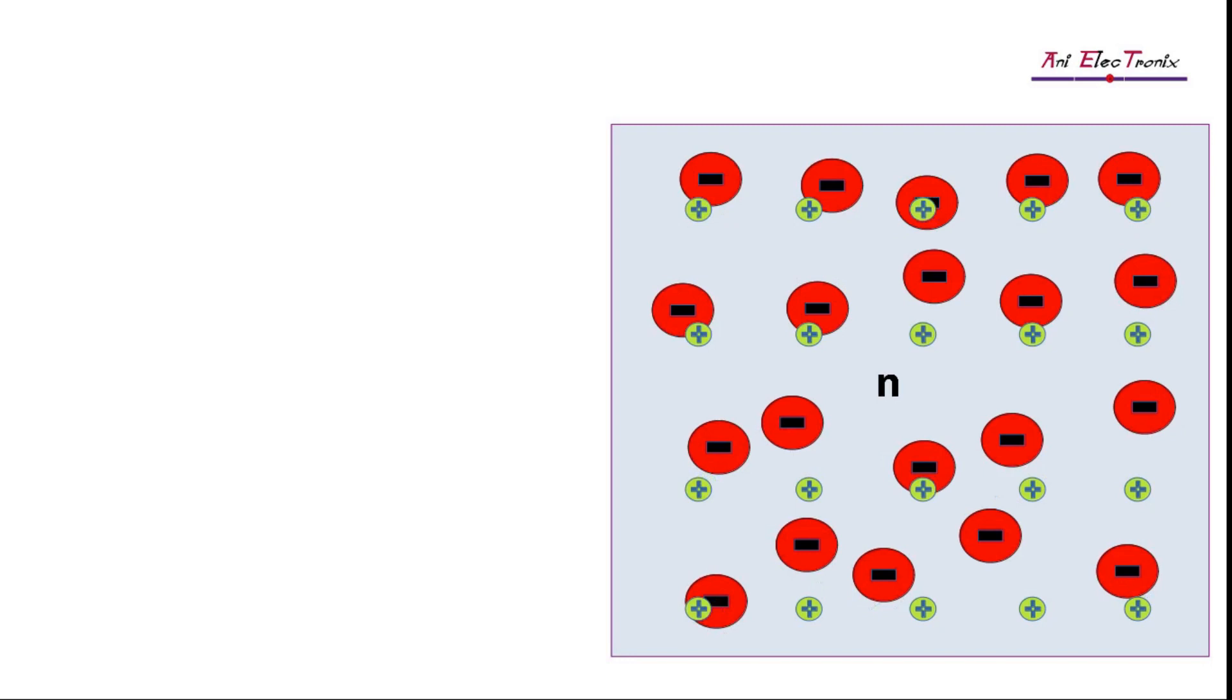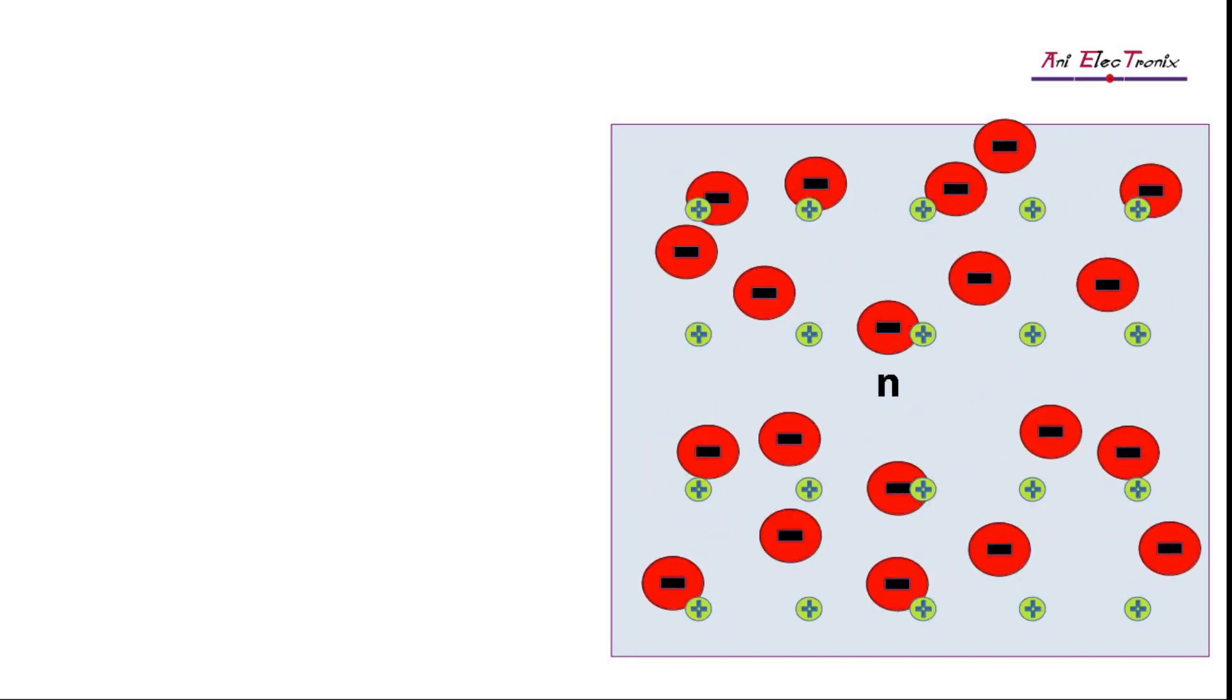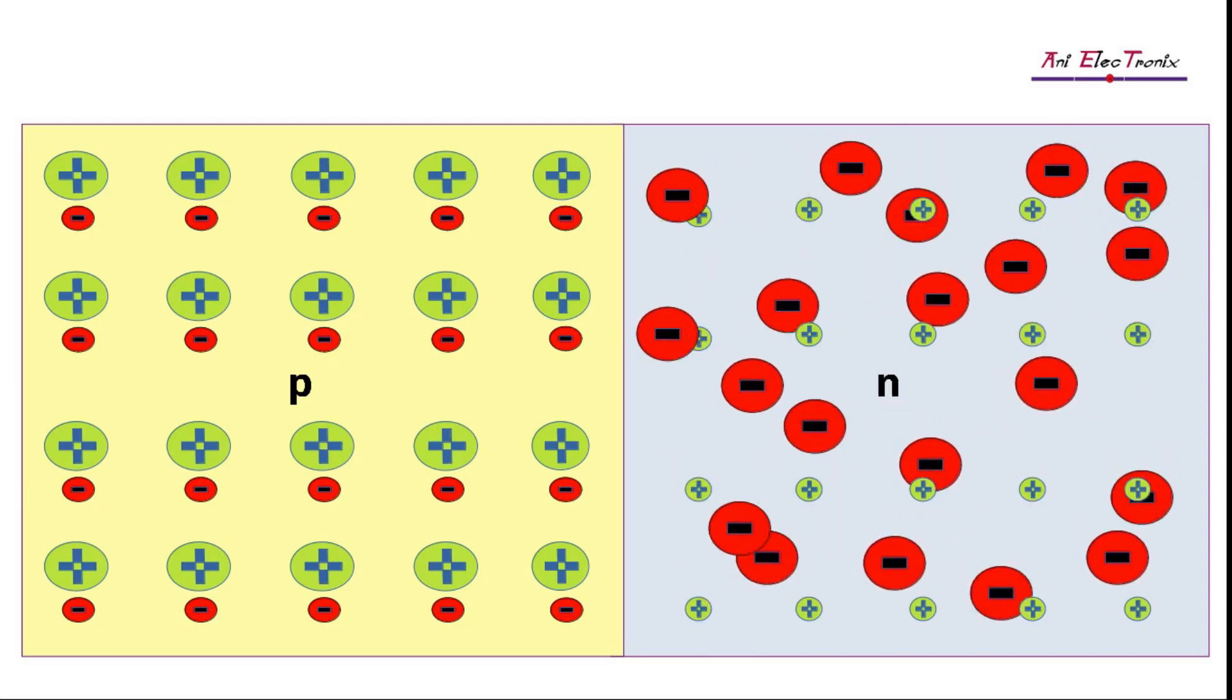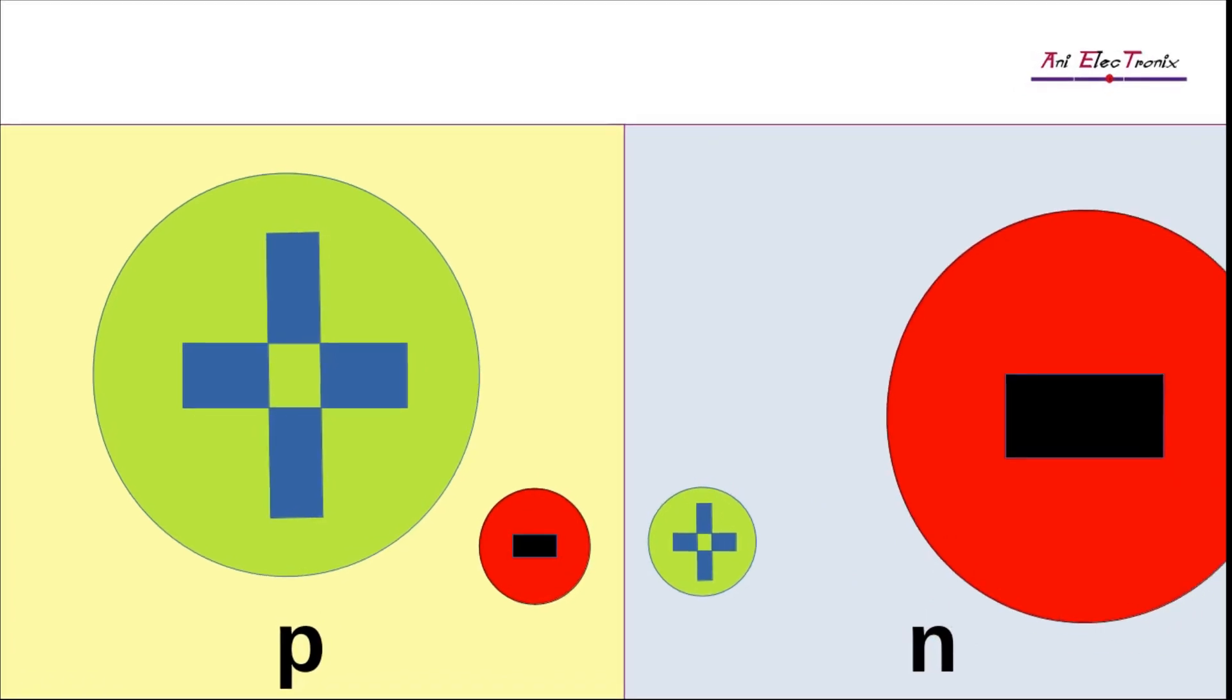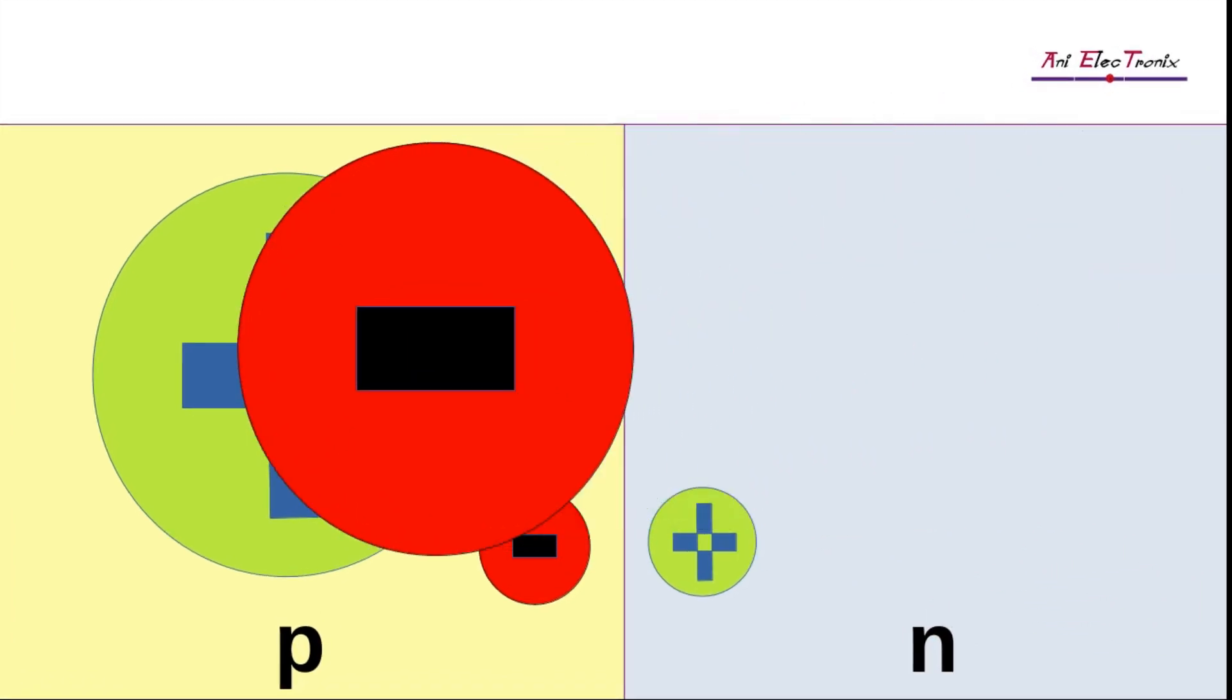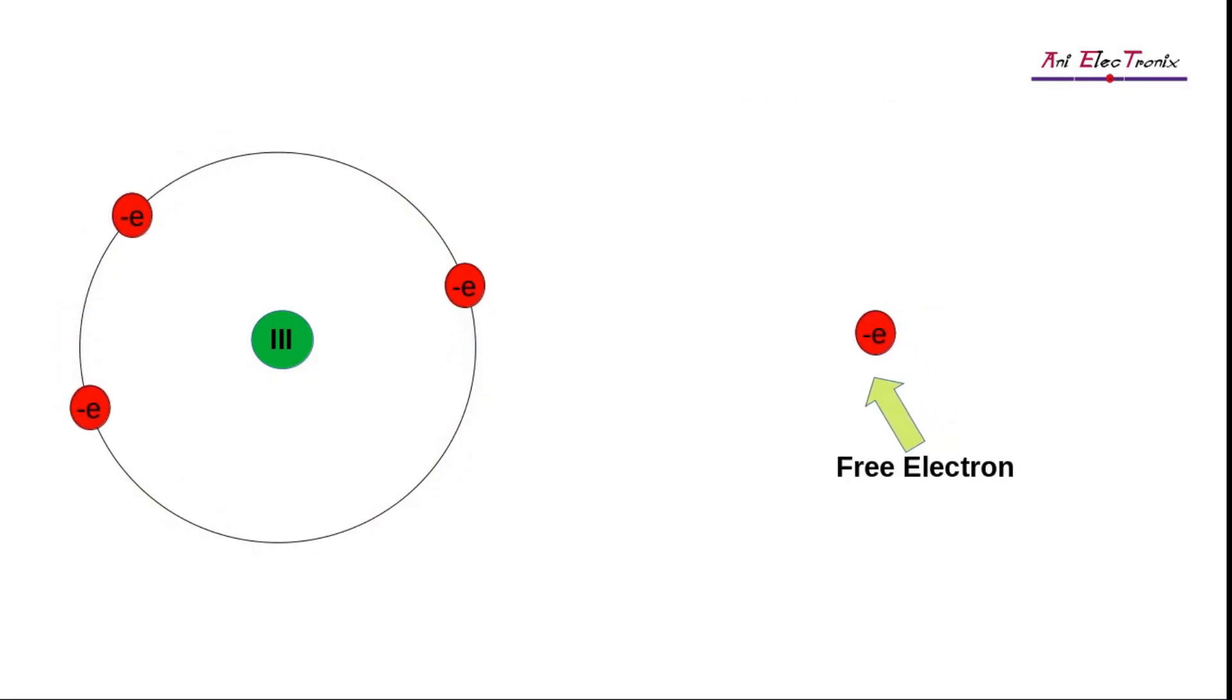Upon forming the P-N junction diode, the free electrons on the N-side feel repulsion, and a few of them diffuse across the junction and enter the P-side. Once the free electrons enter the P-region, they recombine with the holes. The holes disappear, and the free electron becomes the valence electron as the trivalent atom captures it in its valence orbit.